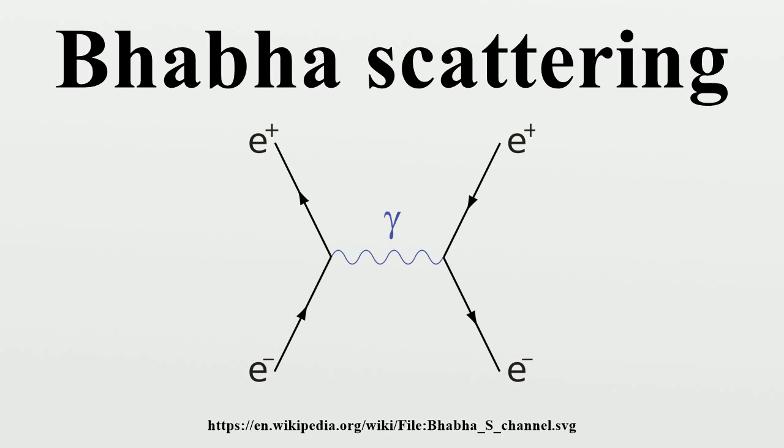Differential cross-section to leading order: The spin-averaged differential cross-section for this process is where S, T, and U are the Mandelstam variables, the fine structure constant, and the scattering angle.